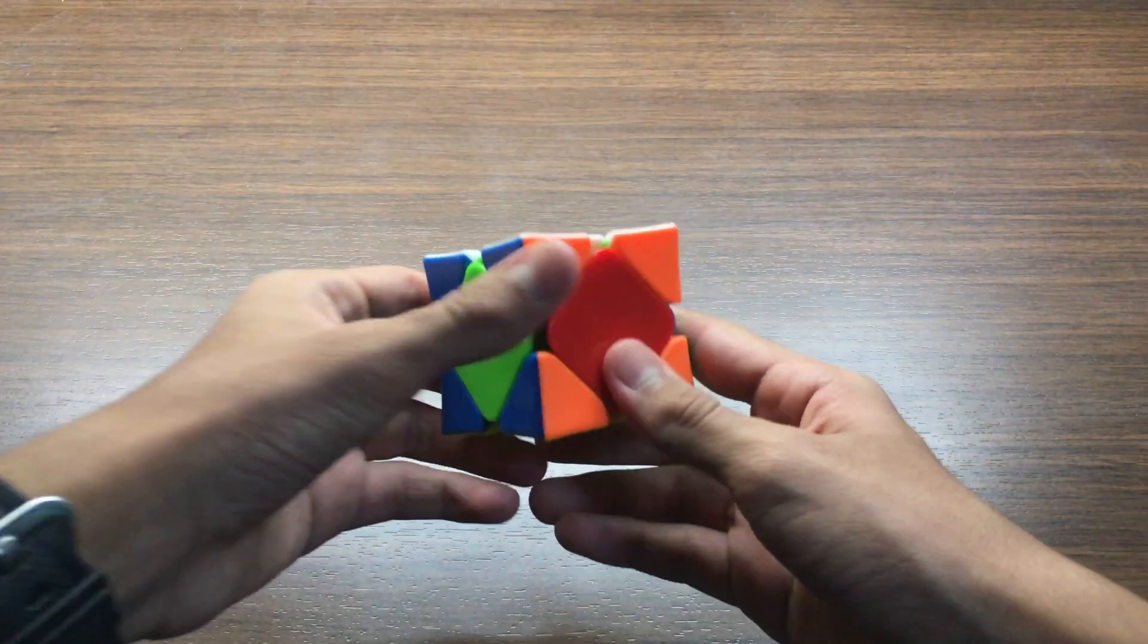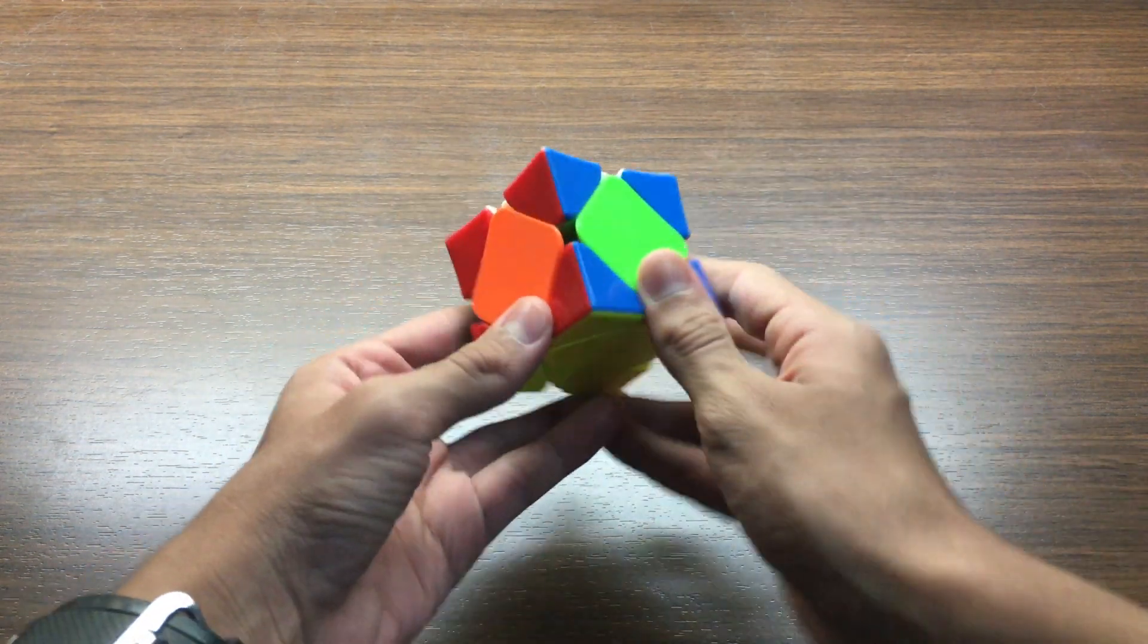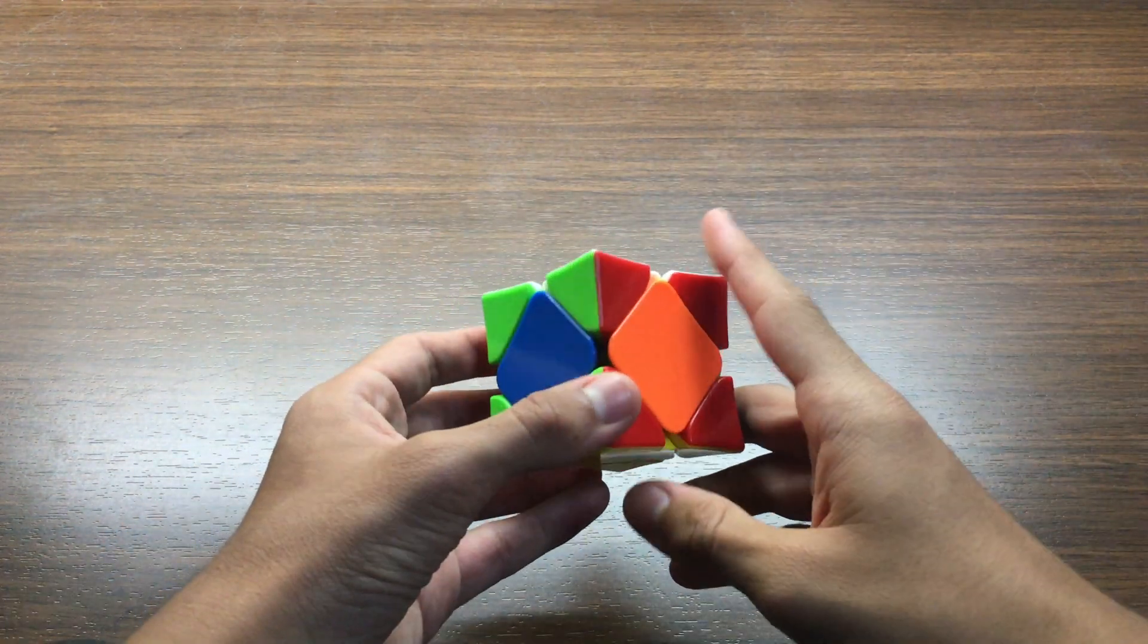And the final case is the H perm. It's very easy to recognize because these two are opposite pieces and these two are opposite pieces. This is the algorithm for it.